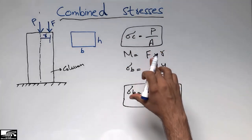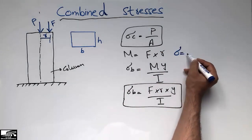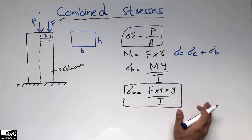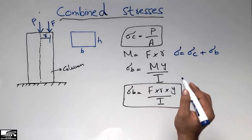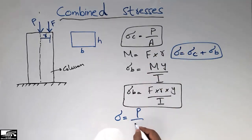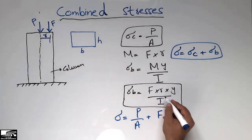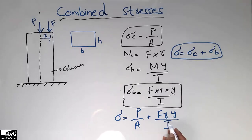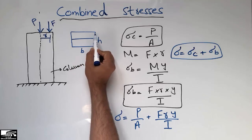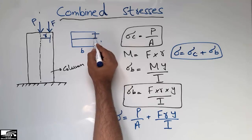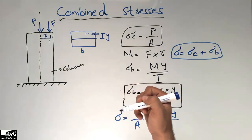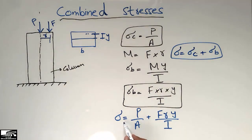These stresses together are known as combined stresses. We can write the combination as: compressive stress P over A, plus bending stress F times R times Y over I, where I is the moment of inertia, R is the distance from the centroid to the eccentric load, and Y is the distance from the centroid to the point of interest where we want to find the stress. By adding these two stresses, we get the combined stresses.